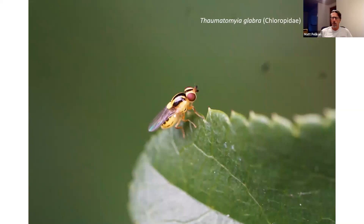Some flies, I think we just have to say, are cute. I really can't think of a better word than that to describe this particular chloropid fly — a tiny little thing, about an eighth to three-sixteenths of an inch long. The larvae of this particular species feed on aphids underground, so-called root aphids that feed on roots of plants. I photographed this one in my yard. There are interesting-looking flies all over the place — wherever you are, you can find them.